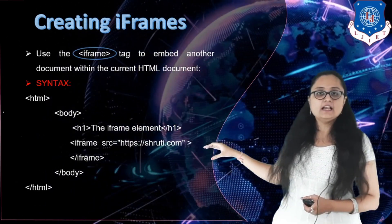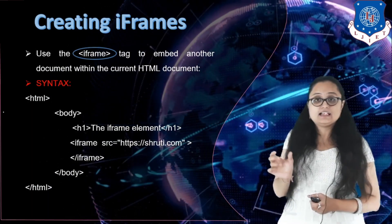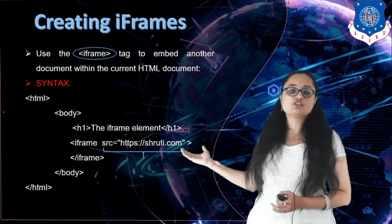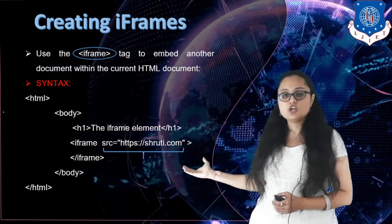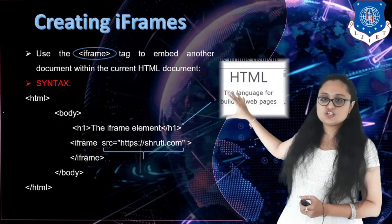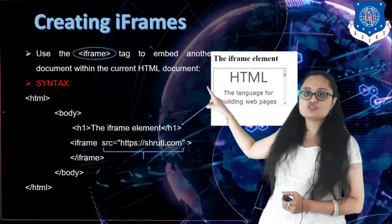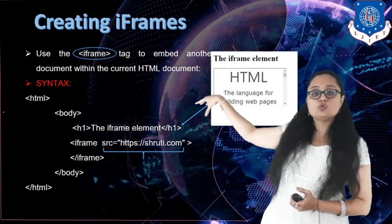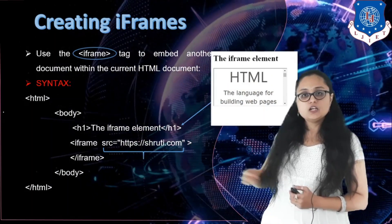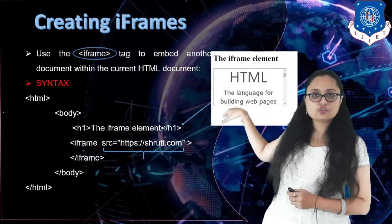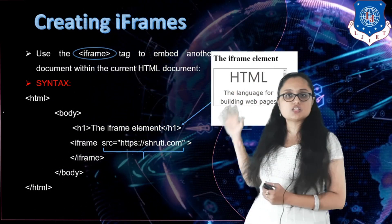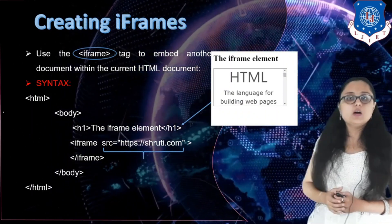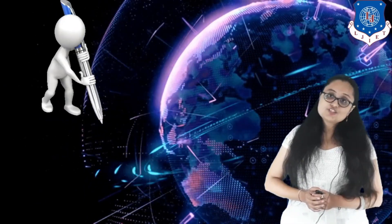The syntax for iframe uses the tag name iframe with a src attribute specifying the HTML document to load. The result is a web page with a small embedded window containing the loaded document, which has its own scroll bar. You can scroll the inline document independently from the rest of the page. This was all about iframe and today's lecture. Thank you.